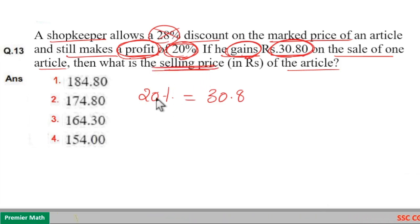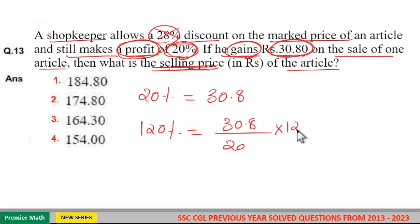Now 20% is 30.8, then we need selling price. What is selling price? If profit is 20%, selling price is 100 plus 20, which is 120%. So 120% is equal to 30.8 divided by 20% into 120.